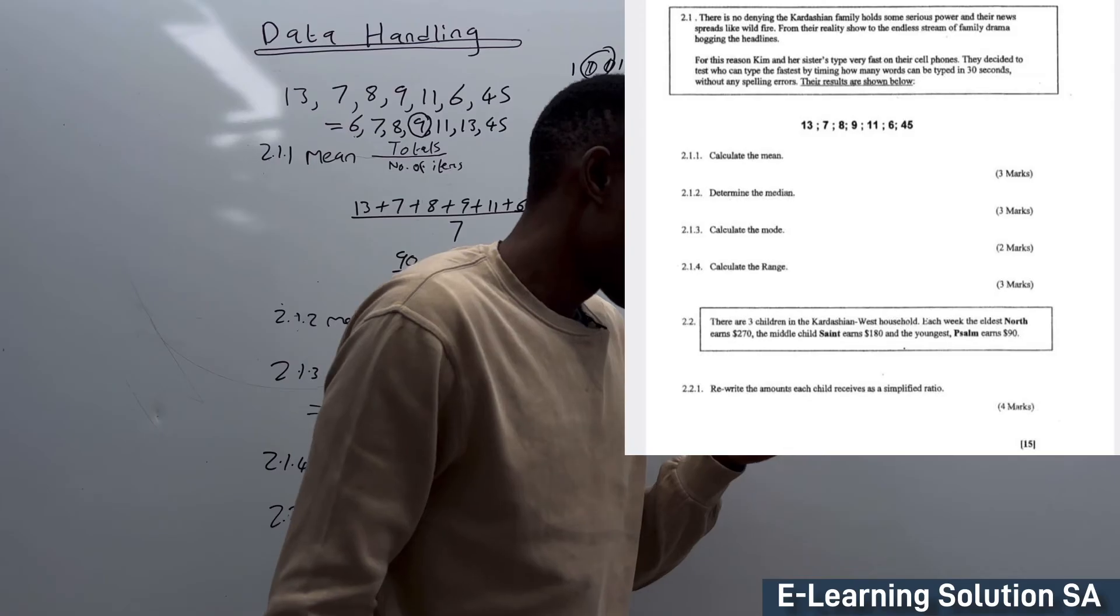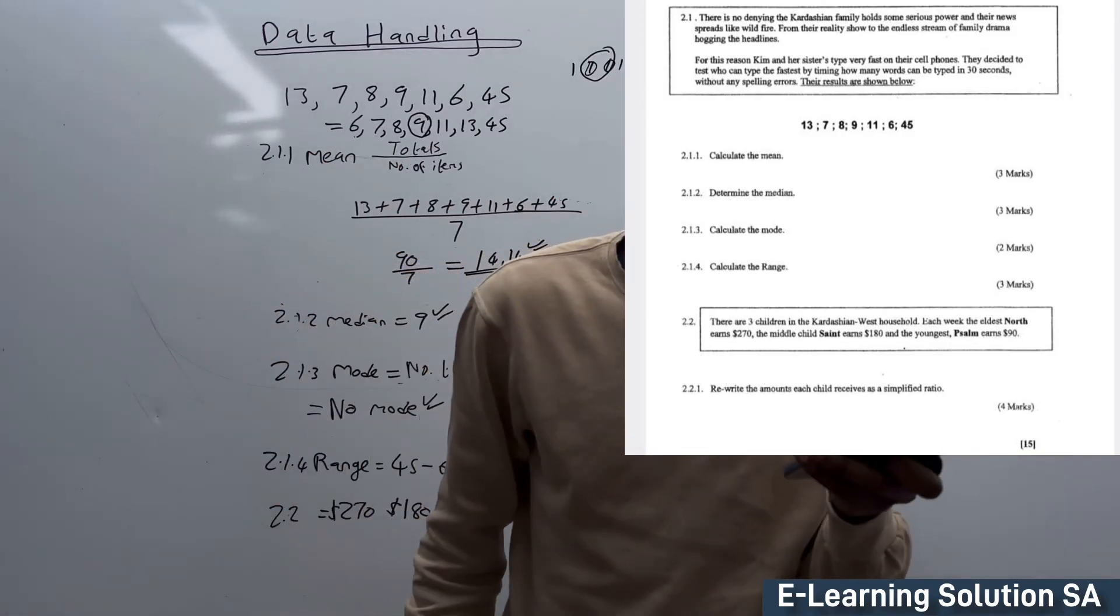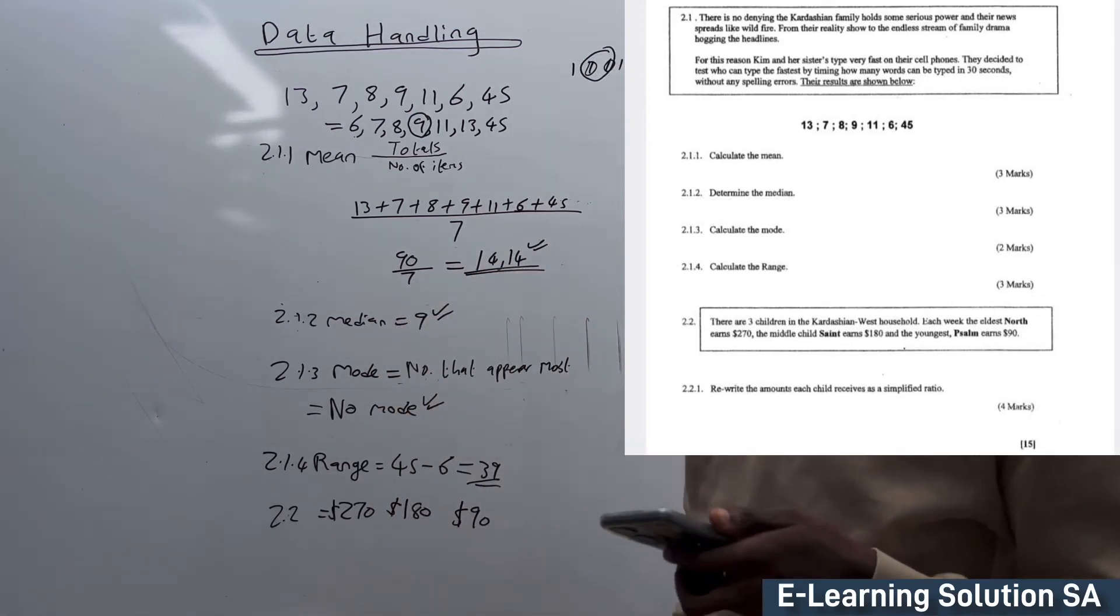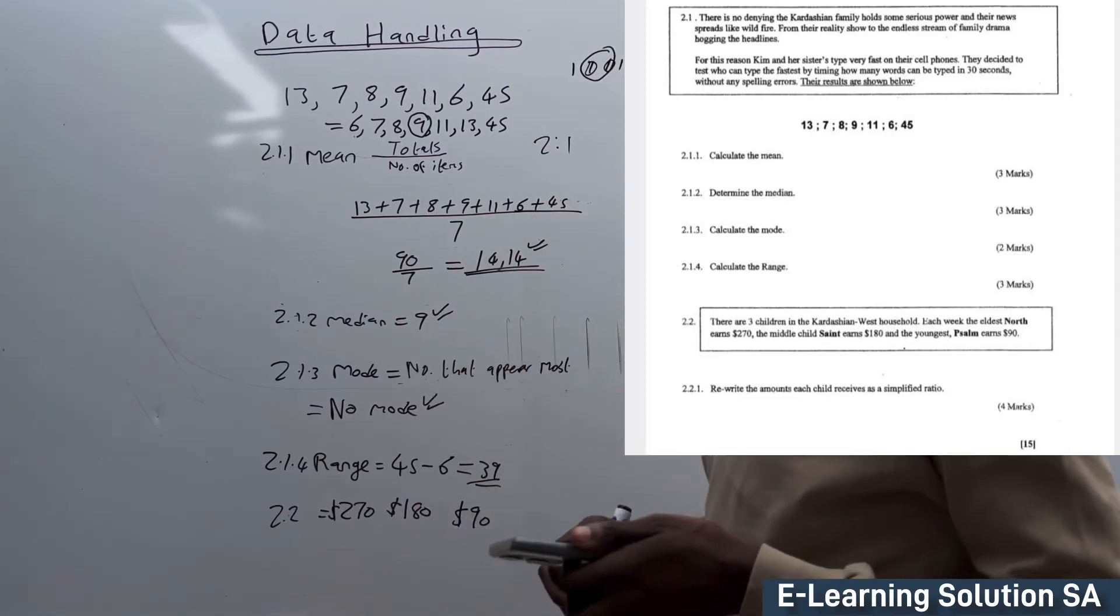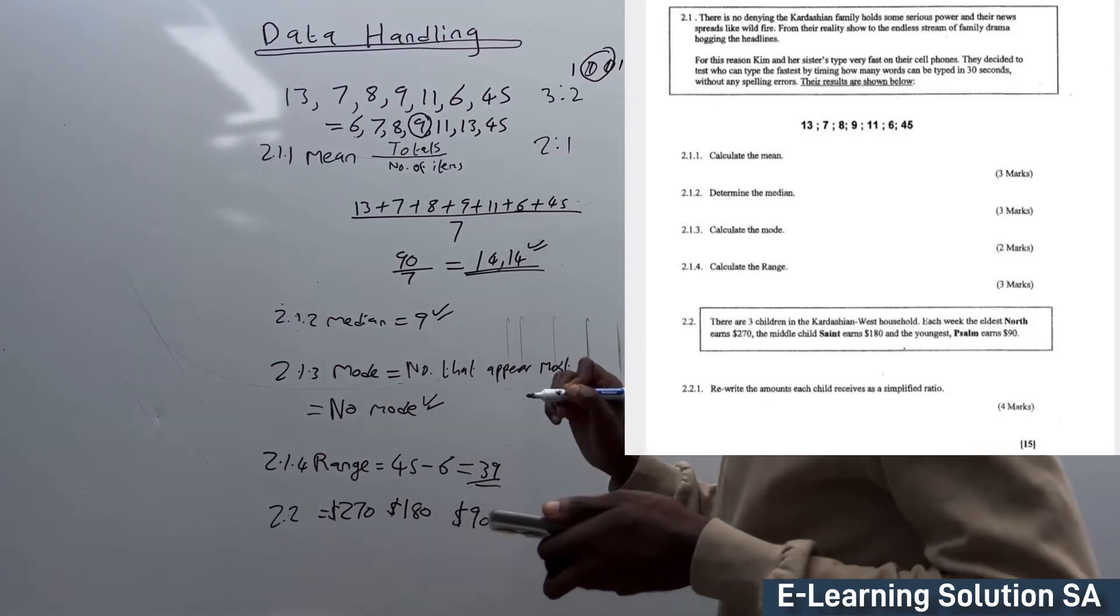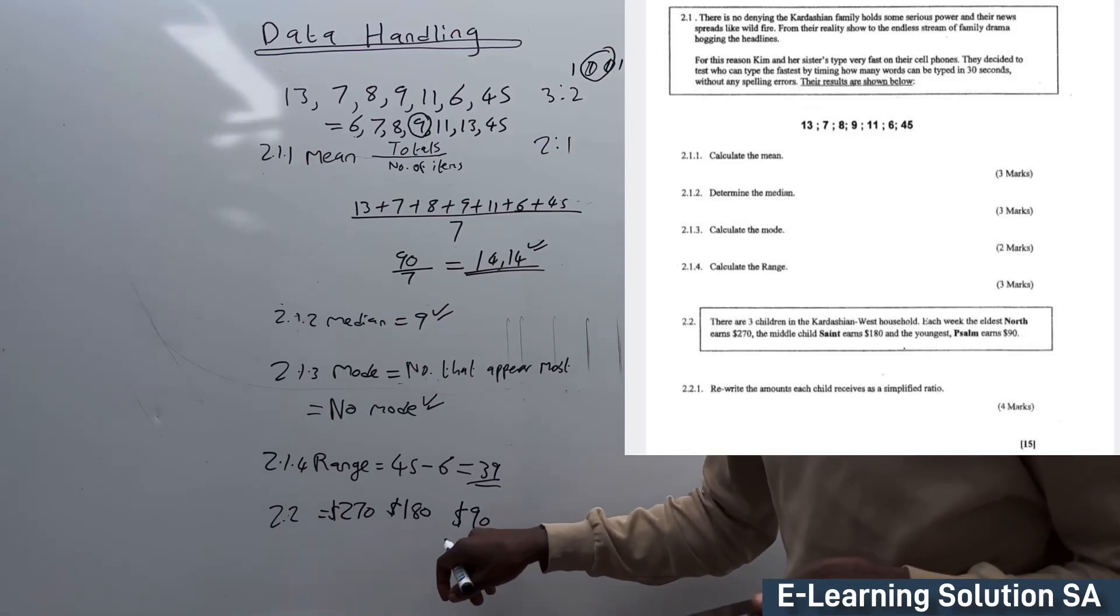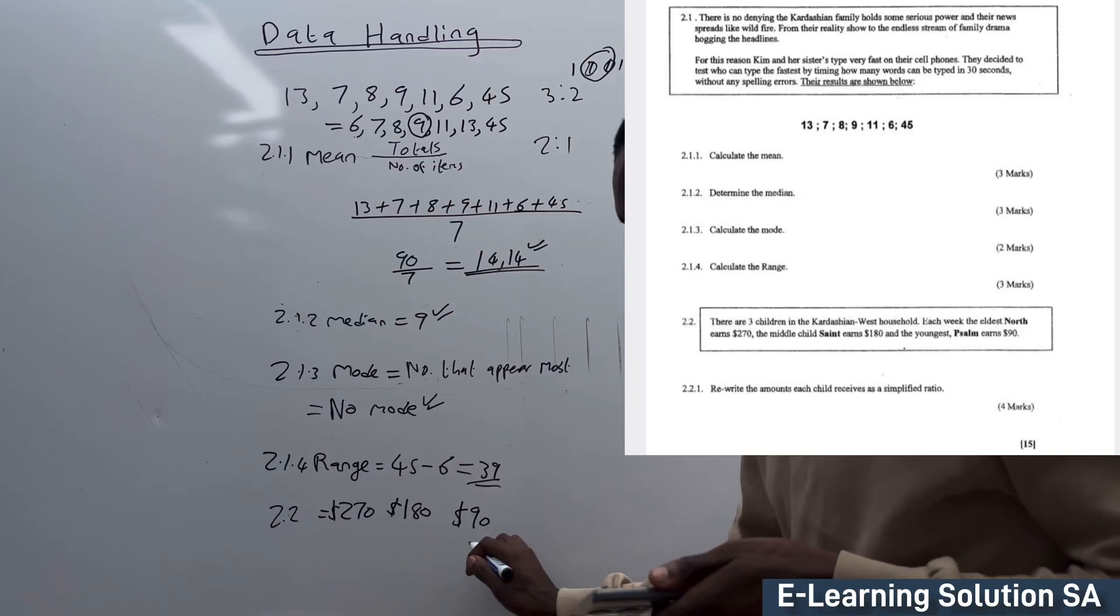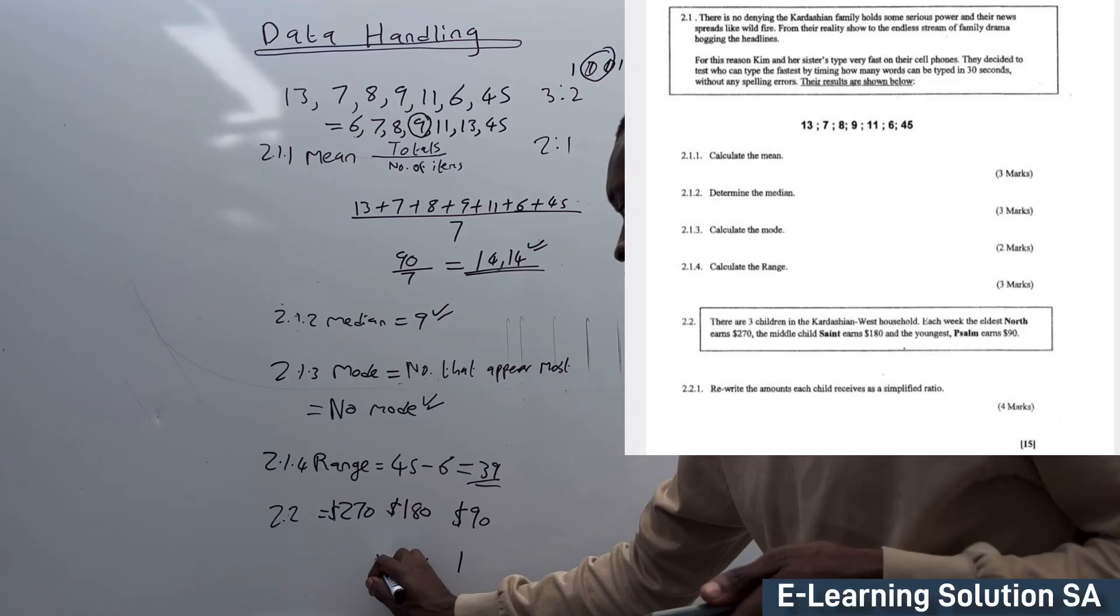The question says rewrite the amount each child receives as a simplified ratio. A ratio is like 2:1 or 3:2. We need to identify the lowest one. The lowest is 90. We can say that's 1. Now check how many times 90 goes into 180.